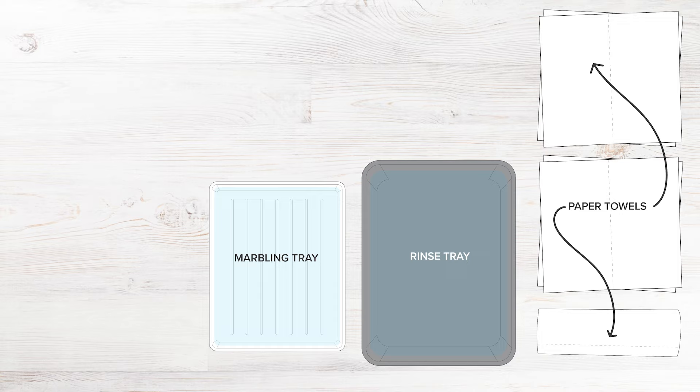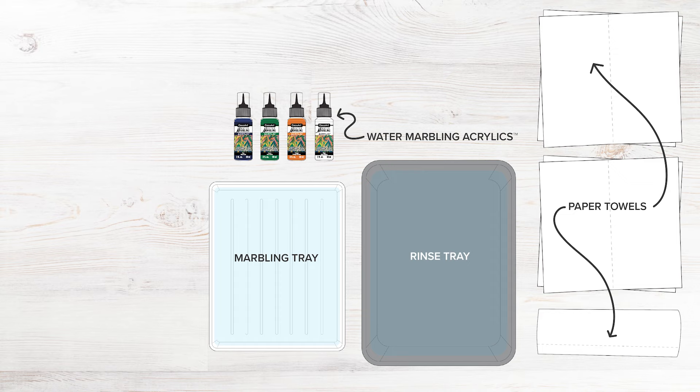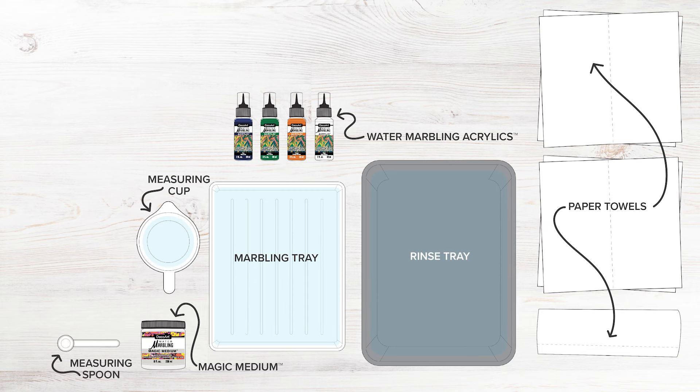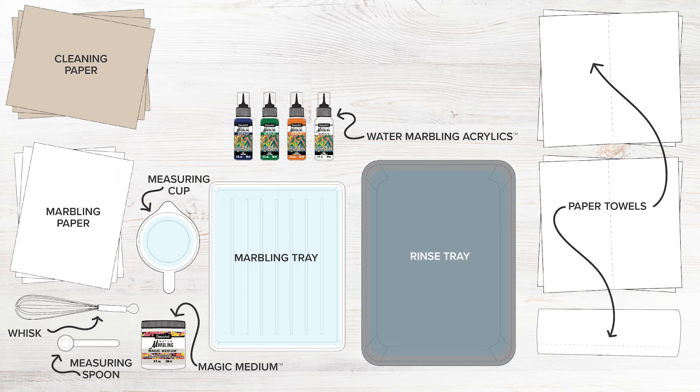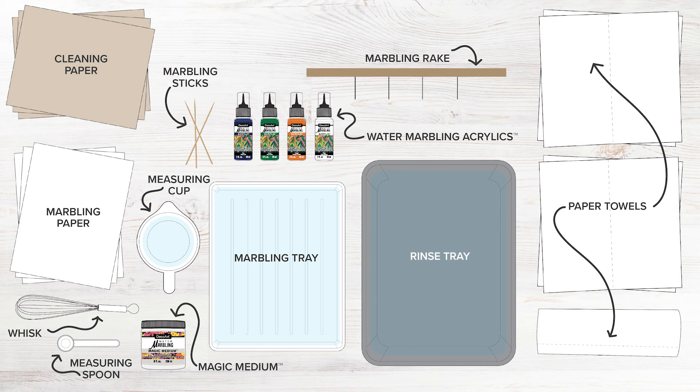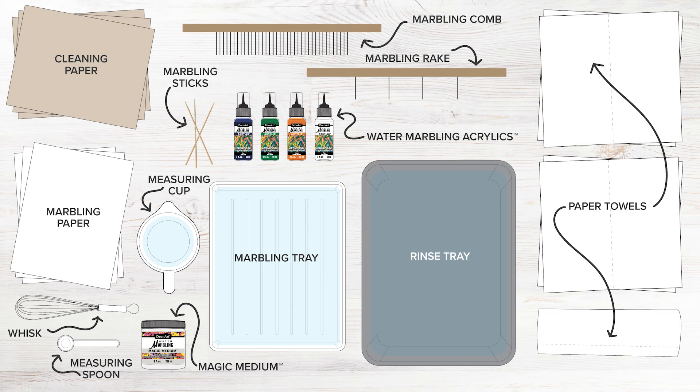You're also going to need marbling paints like DecoArt water marbling acrylics, a water thickening additive, a measuring cup, a measuring spoon, a whisk, cleaning paper, your project surface. We recommend you start with DecoArt premium water marbling paper. You may also want to include marbling sticks, a marbling rake, and a marbling comb. And of course, you're going to need water.